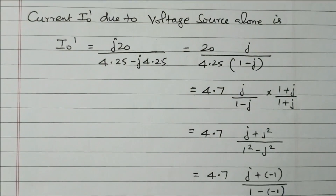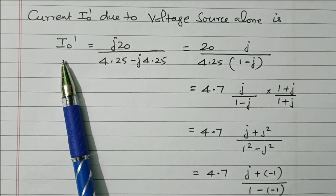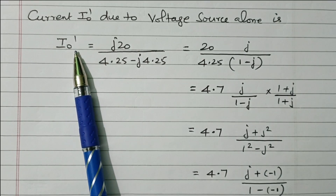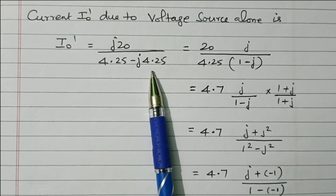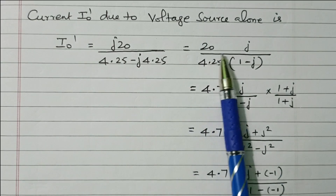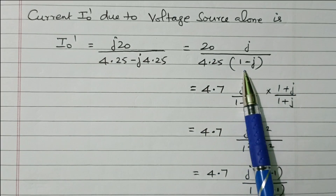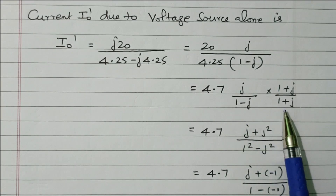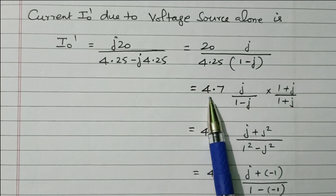Now we can find I₀ dash. Because of the single loop, current through all elements is equal. I₀ dash equals the voltage source j20 divided by the total impedance 4.25 − j4.25. Taking 4.25 outside: j20 divided by 4.25(1 − j). To remove the complex denominator, multiply and divide by the complex conjugate (1 + j).